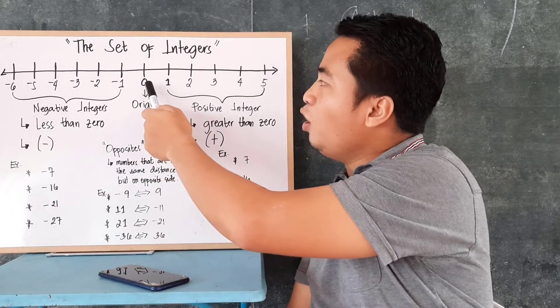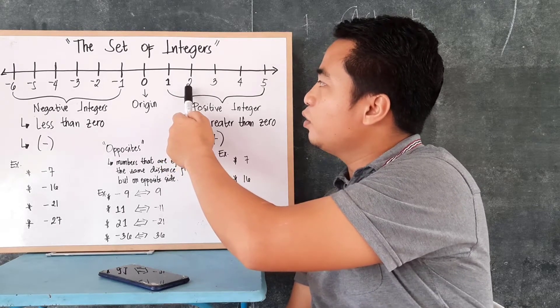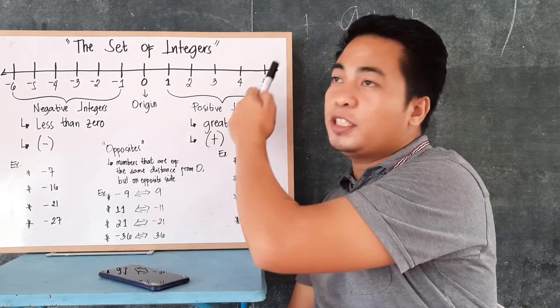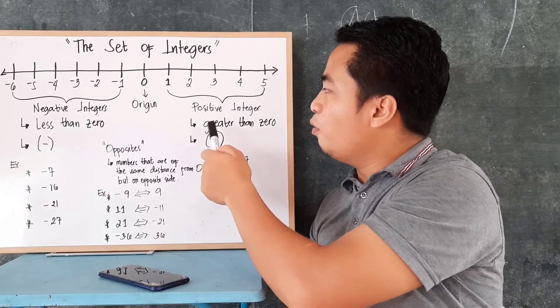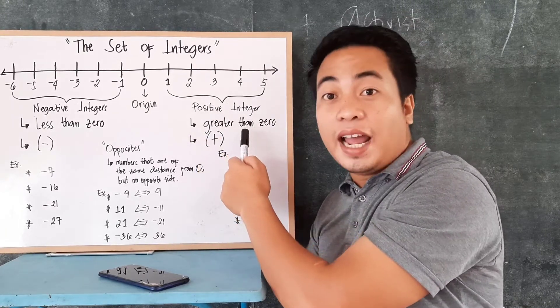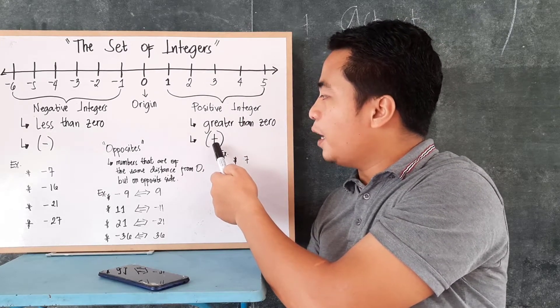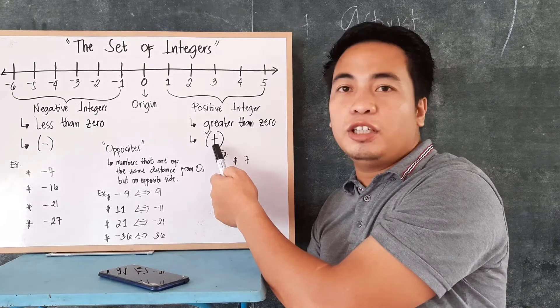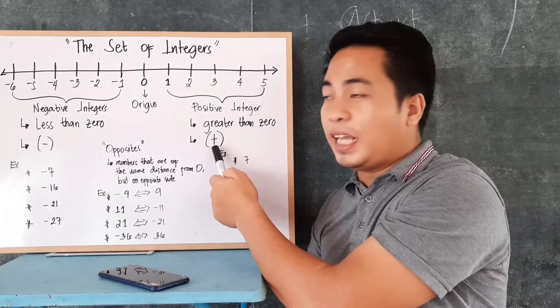And all numbers greater than 0, like 1, 2, 3, 4, 5, and so on, we call them positive integers. Now, positive integers are greater than 0, and oftentimes, the symbol or the sign that we use for positive integers is a plus sign.